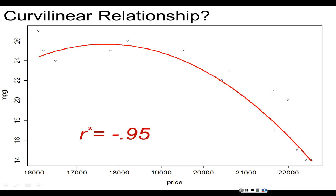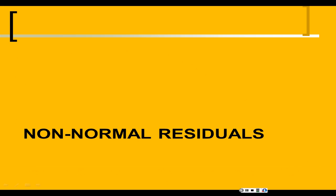When you violate the linearity condition, the problem is that you're going to underestimate the actual association in almost all cases. So it's just good for you to make sure that you find the curve if there's one there.